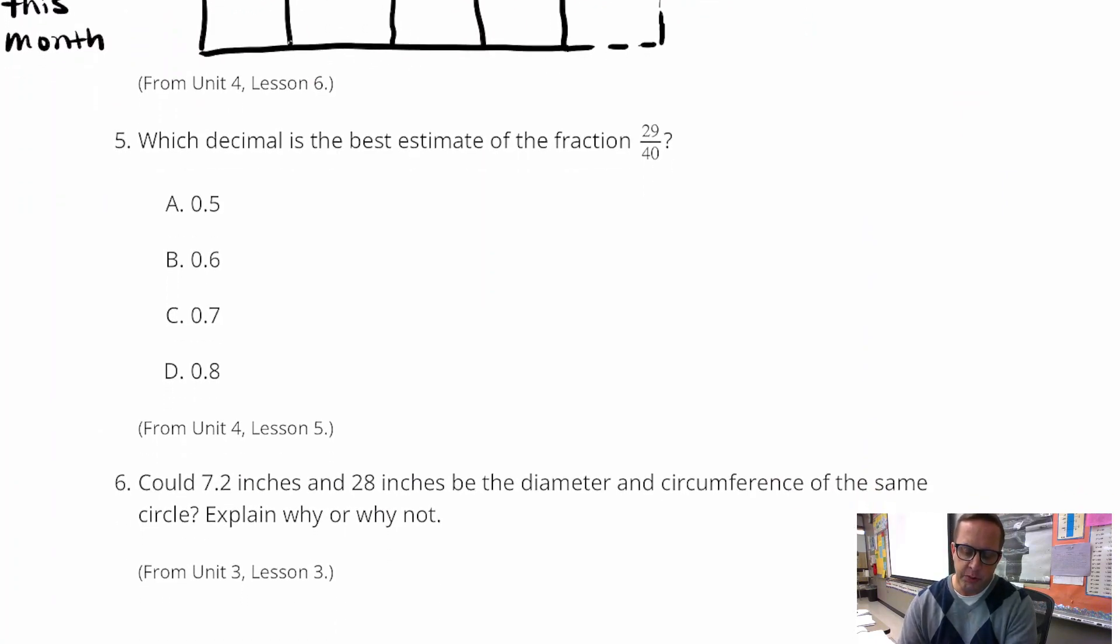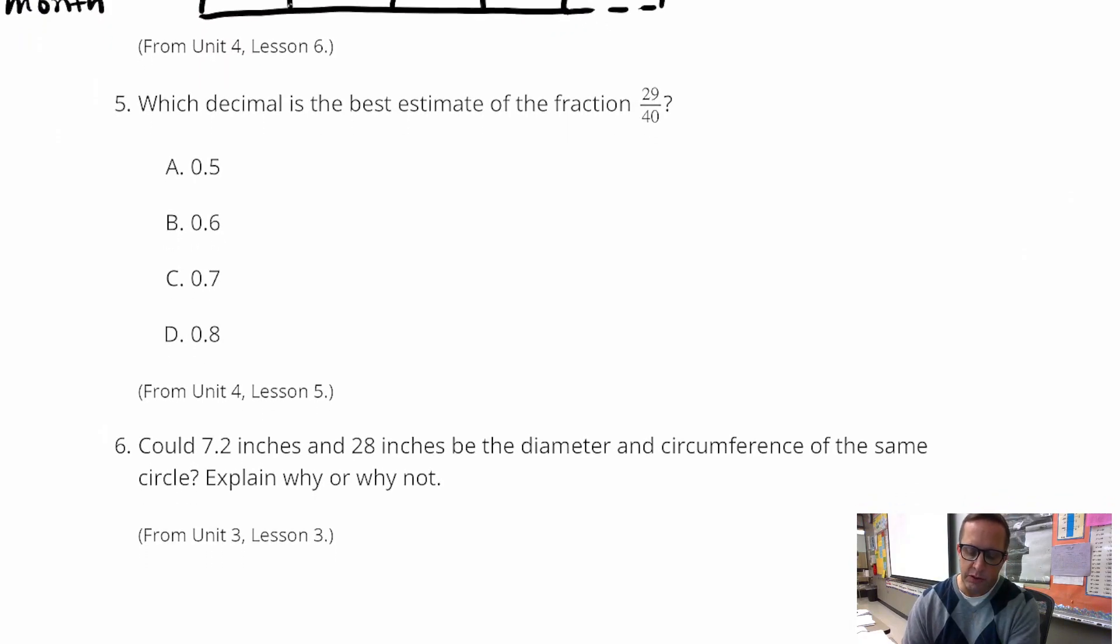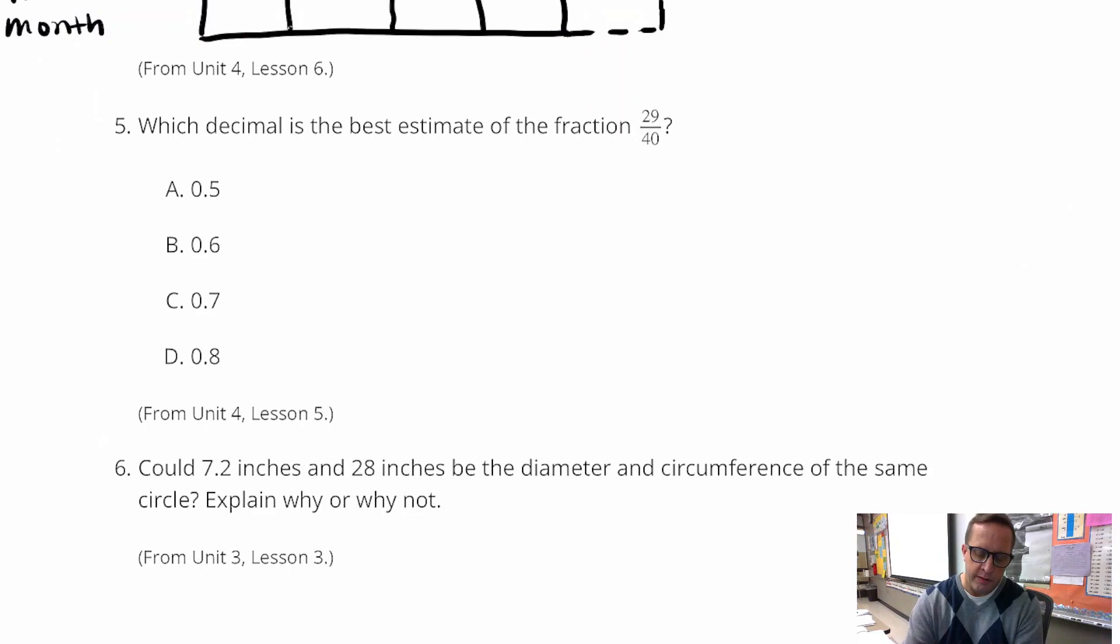Which decimal is the best estimate of the fraction 29/40? 29/40, the way I see it is that it's really close to 30/40. It's pretty close to 30 over 40. And 30 over 40, when you change it into a decimal, is 0.7500. And that must tell us that C is probably the closest to it.